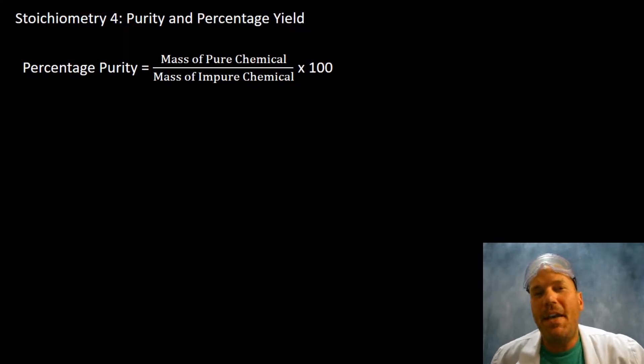In stoichiometry podcast number four, I'm going to talk to you about purity and percentage yield. Now purity is something we've already discussed in terms of the fact that most reactants are not 100% pure. So you have an expression that can be used by dividing the mass of the pure chemical by the mass of the impure chemical and taking that and multiplying it by 100 will give you the percentage purity.